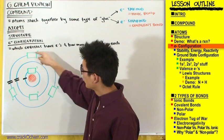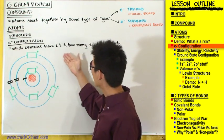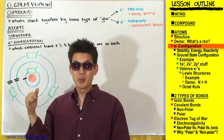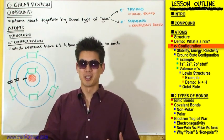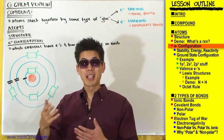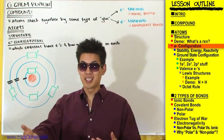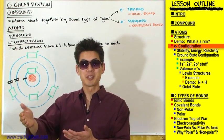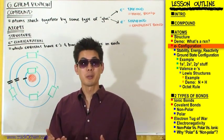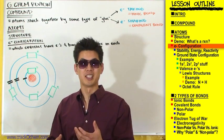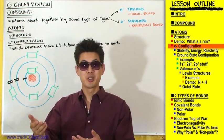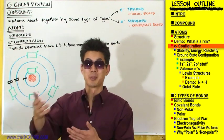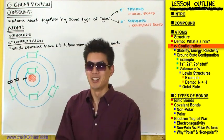We want to know which orbitals have electrons and how many electrons are in each, but we first need to know which atom we're talking about. Different atoms have different numbers of electrons. Carbon is number six on the periodic table so it has six electrons; nitrogen is number seven so it has seven electrons; oxygen is number eight so it has eight electrons.